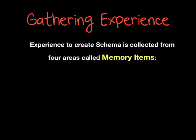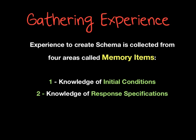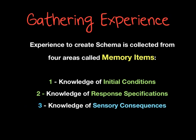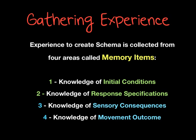How do we get the experience to create schema? This is collected from four different areas called memory items. The first memory item is the knowledge of initial conditions. Second is the knowledge of response specifications. The third is the knowledge of sensory consequences. And the fourth is the knowledge of movement outcome. Two of these relate to recall schema and two relate to recognition schema.